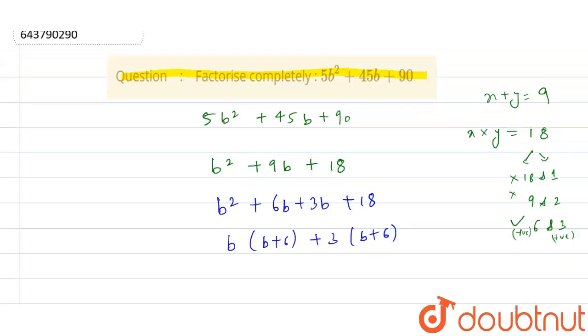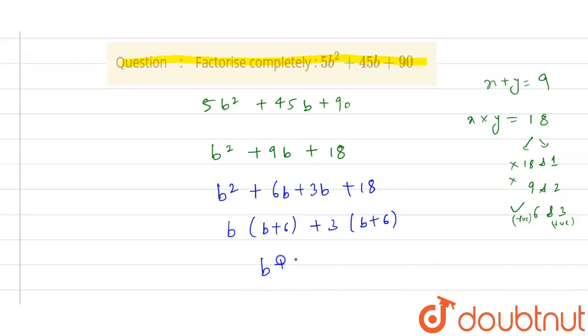So b + 6 is a common factor. So our first factor is b + 6 and second factor is b + 3. So these are the two factors that are (b + 6) and (b + 3). This is the final answer. Thank you.